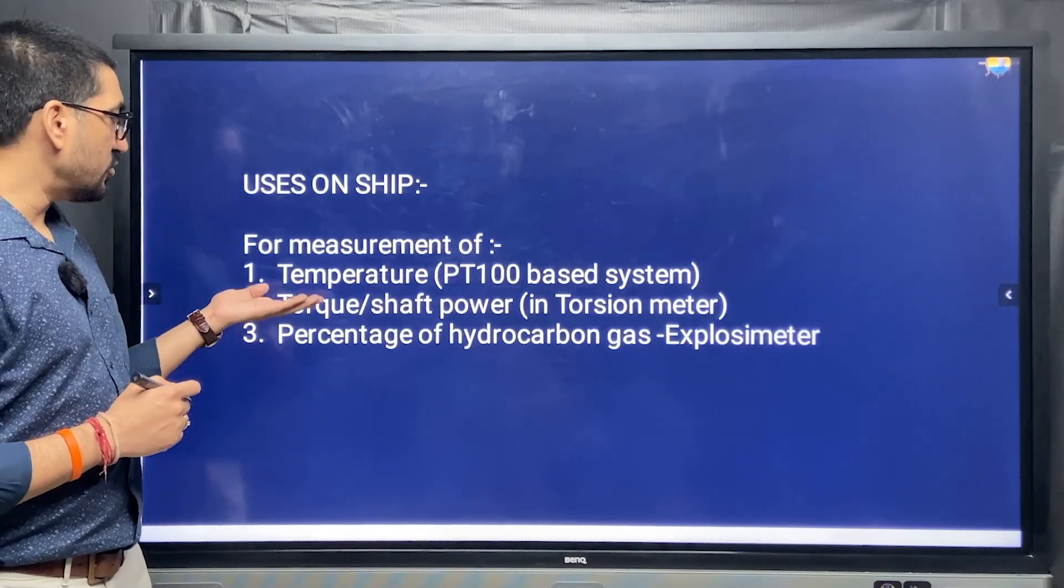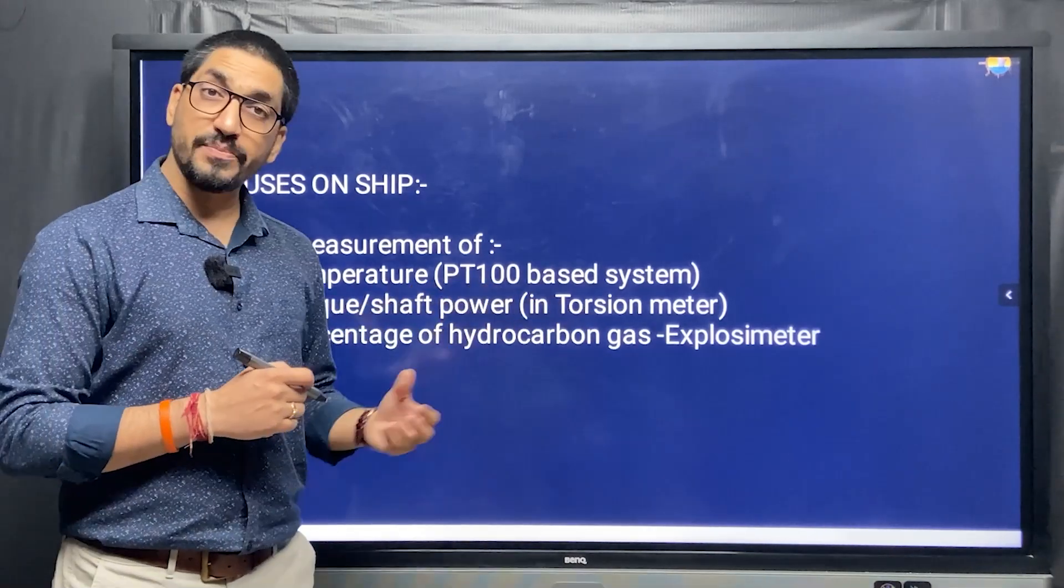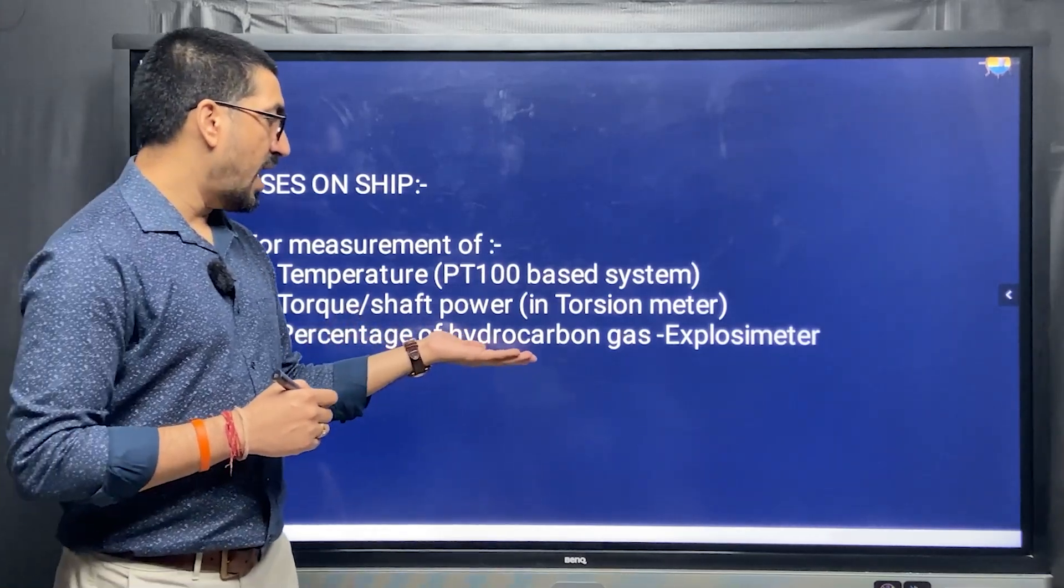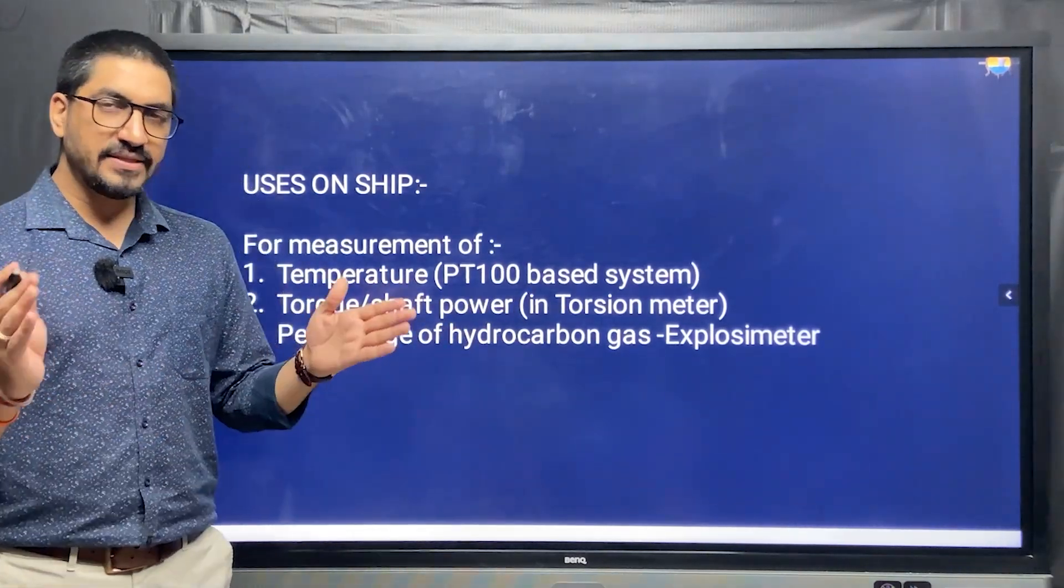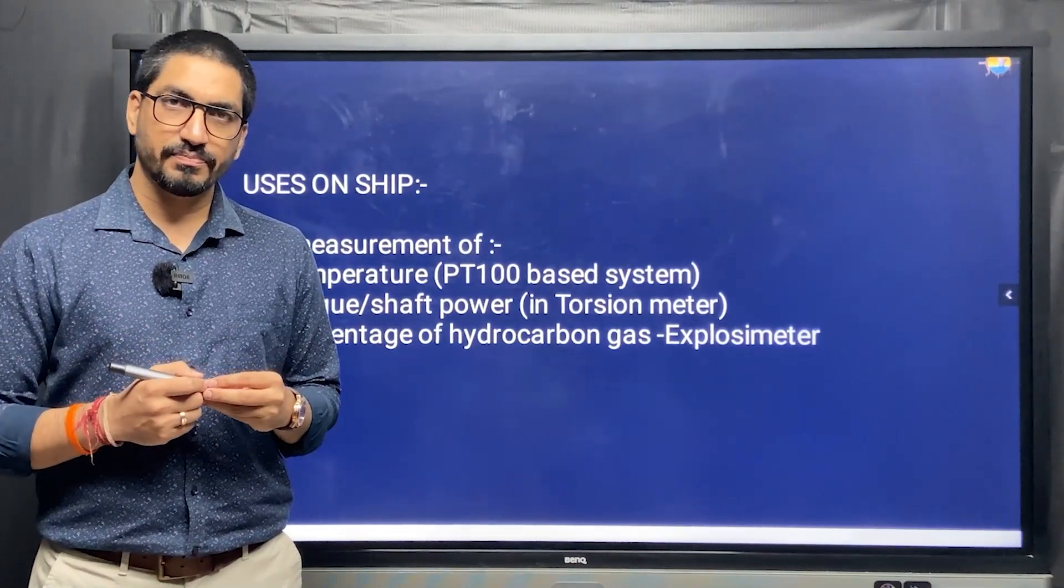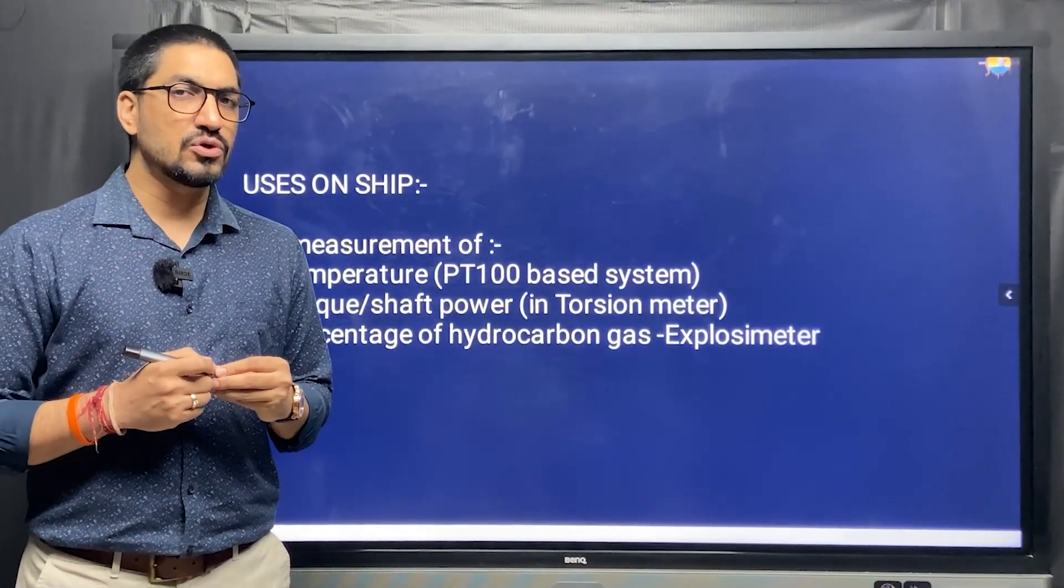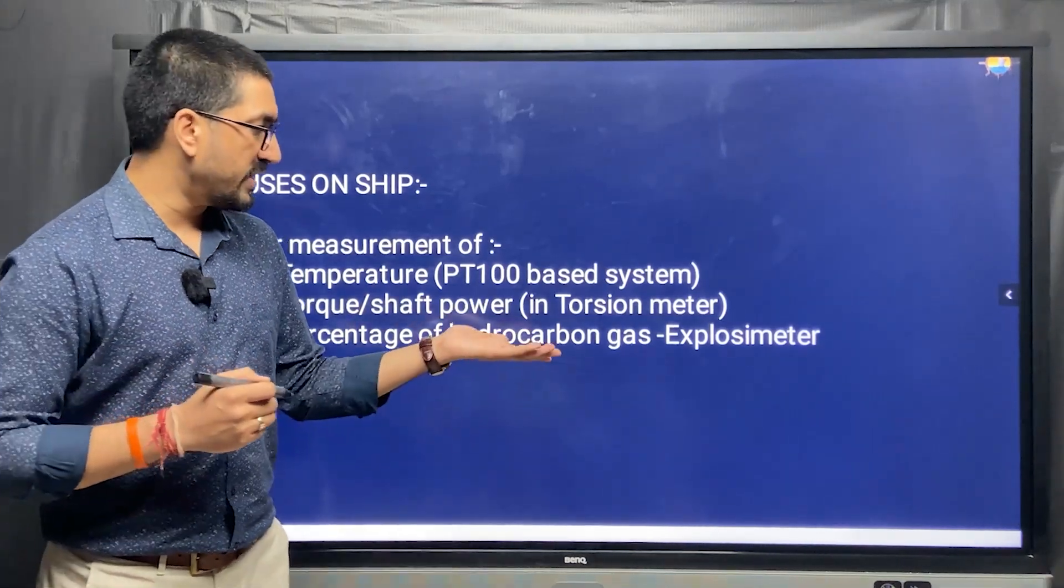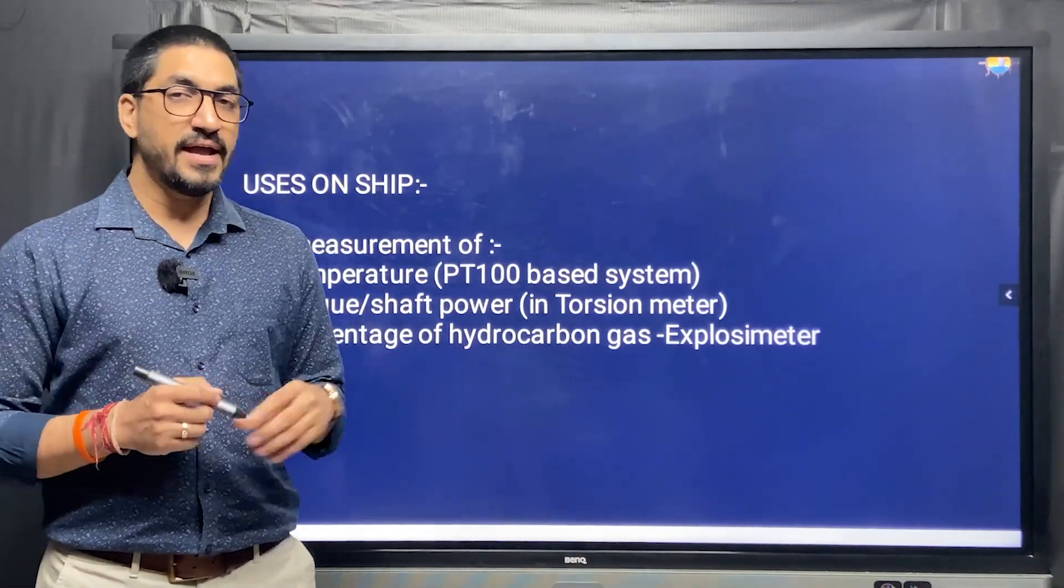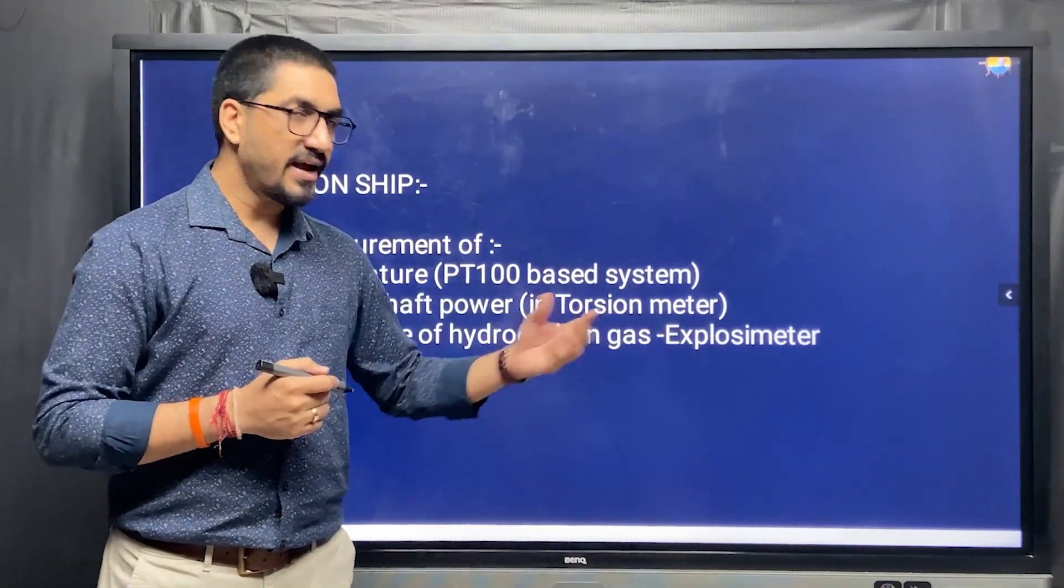Secondly, we can also measure torque or shaft power. In what equipment? Torsion meter. And also, we can get to know how much is the hydrocarbon percentage. There are certain areas on ships where there could be a possibility of hydrocarbon gas and that can be dangerous. So we must monitor those areas. For that reason, we are using an equipment called explosive meter which basically is measuring hydrocarbon percentages. We are using Wheatstone bridge in the circuitry of that explosive meter.